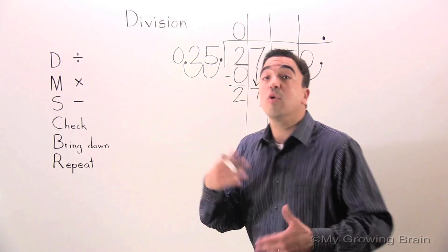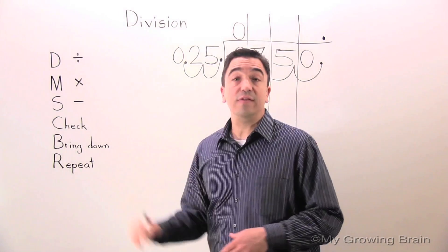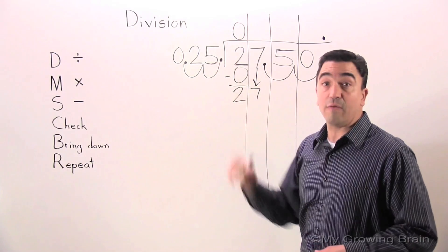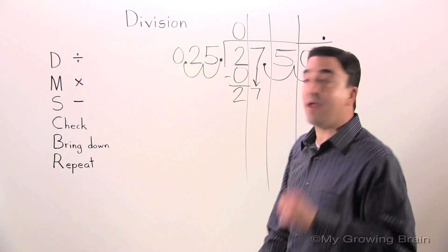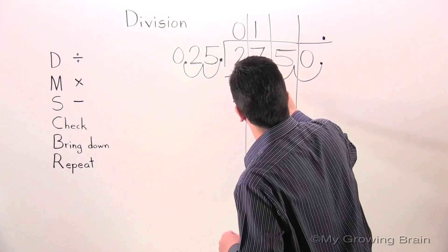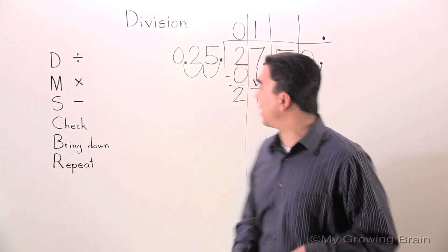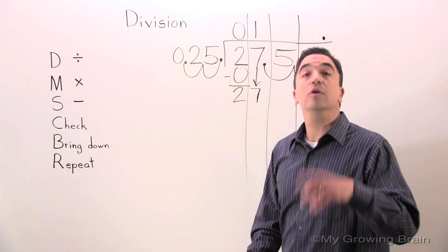Next step. Repeat. Repeat the whole process. Go back to the top. Divide. 27 divided by 25, or 25 into 27? One time. Now, we're going to multiply. 25 times 1 equals 25.